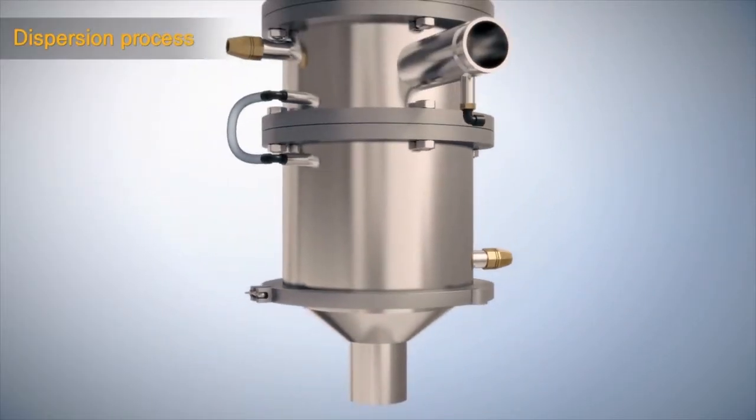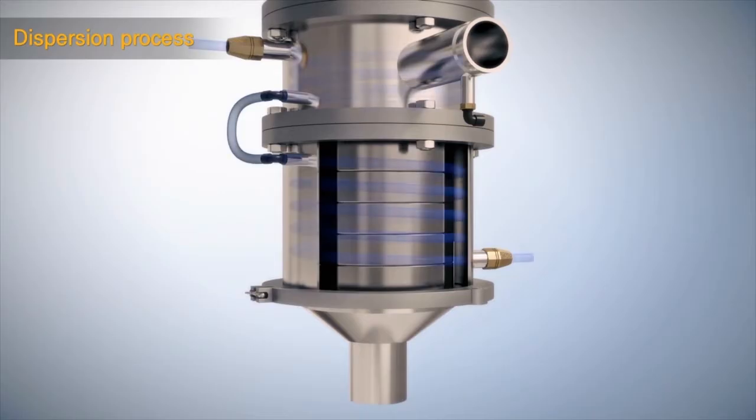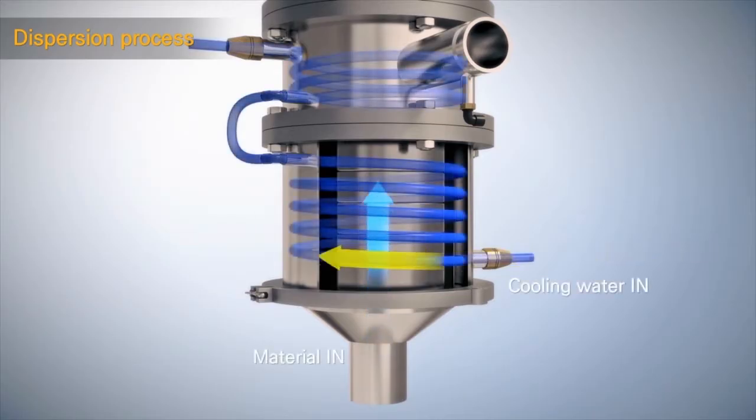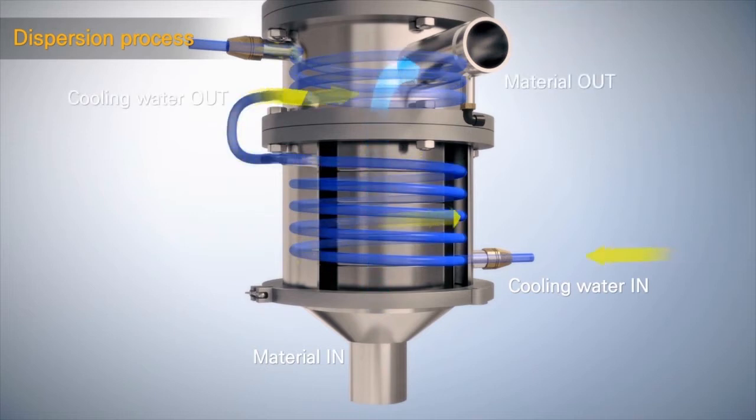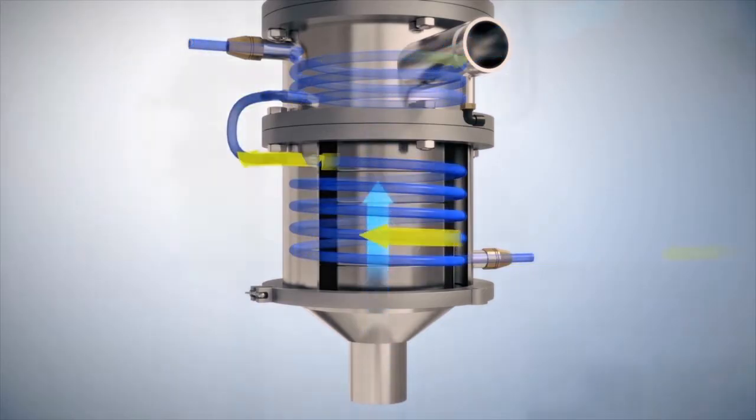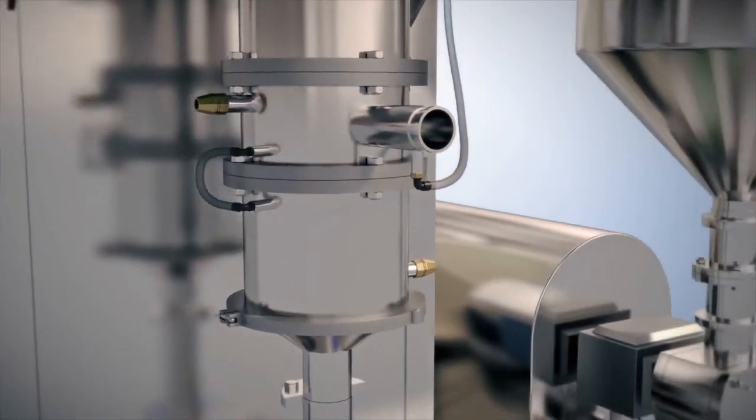By using PASSEN, labor costs can be dramatically decreased and work efficiency can be maximized up to 8 times in producing 300 kg of high viscosity industrial adhesives and 2.4 times in manufacturing printing ink.